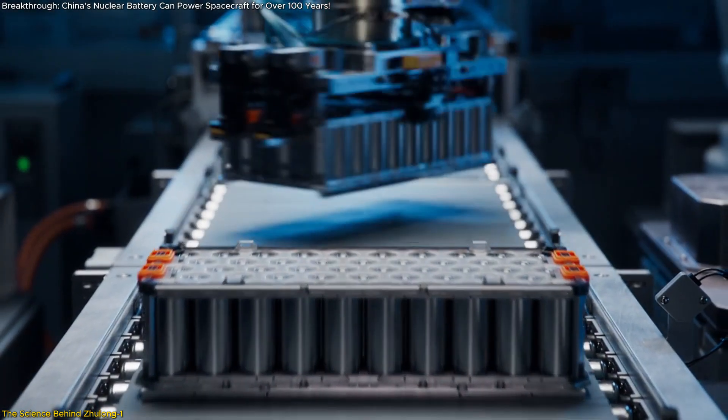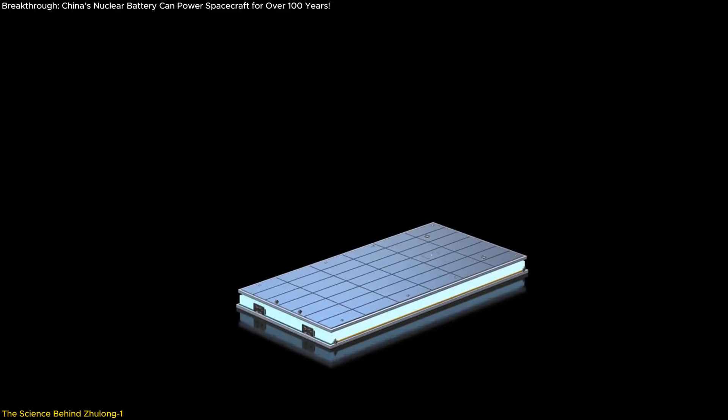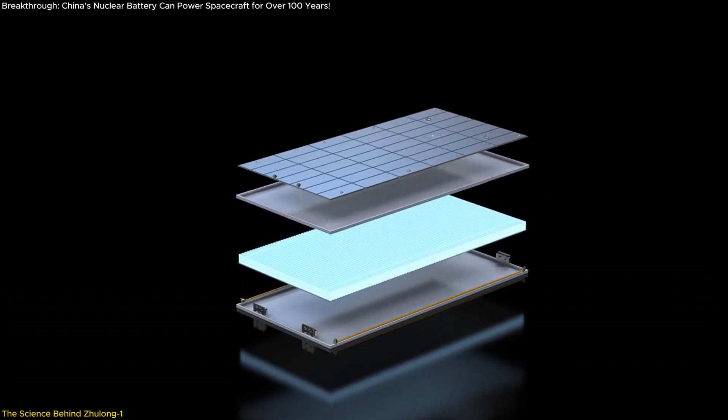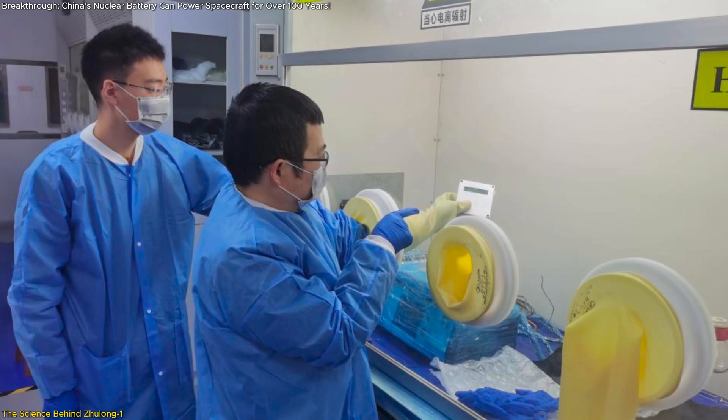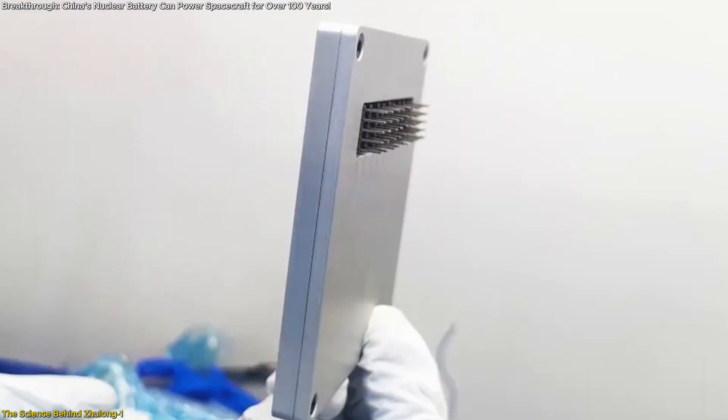Unlike lithium-ion batteries, which lose efficiency with each charge cycle, Zhulong-1 does not require recharging and remains functional for over a century. It also boasts an energy density 10 times greater than standard lithium-ion batteries, meaning it could deliver more power in a smaller form factor.